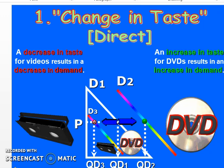The first determinant is the change in taste. The phrase 'other things remaining the same' refers to all these factors. The first factor is change in taste — a decrease in taste for videos results in a decrease in demand.